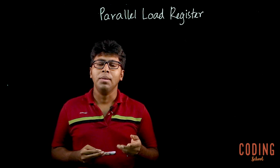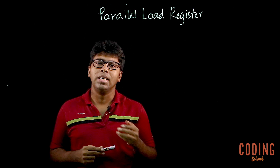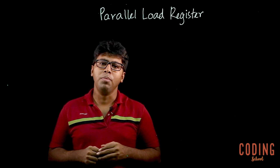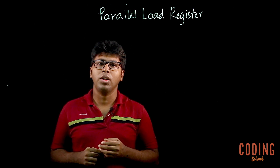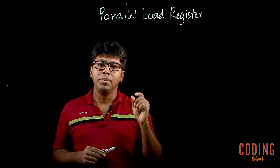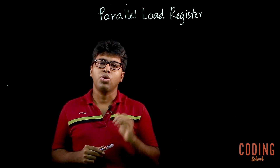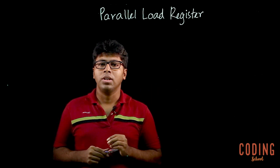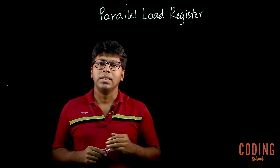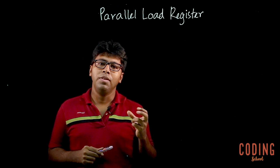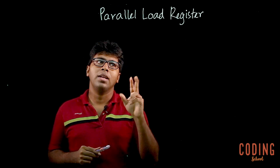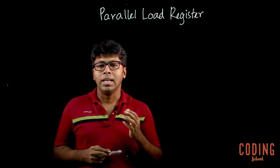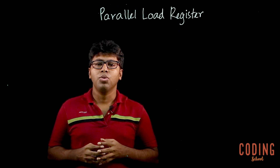We can see the register, and we can see the D flip-flop. The D flip-flop will load a bit of binary data. The D flip-flop can be used in the parallel load register. So, we know the parallel load register.